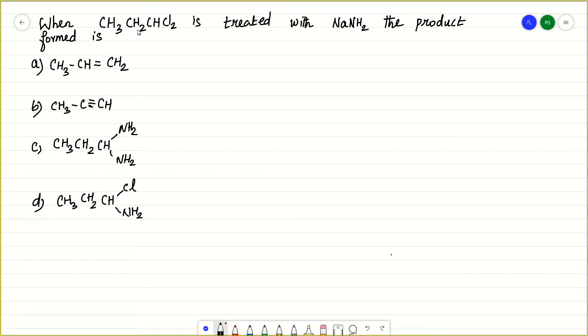When CH3CH2CHCl2 is treated with NaNH2, the product formed is... what is this? This is CH3CH2CH and you have Cl and Cl. What is the name of this compound?